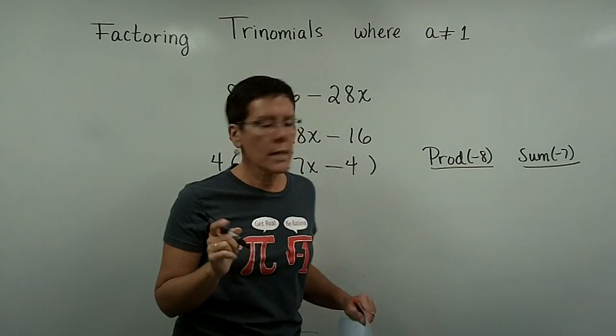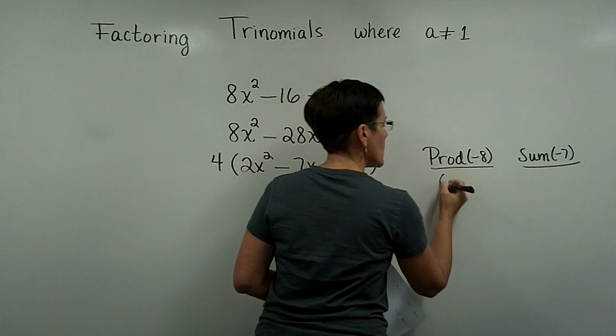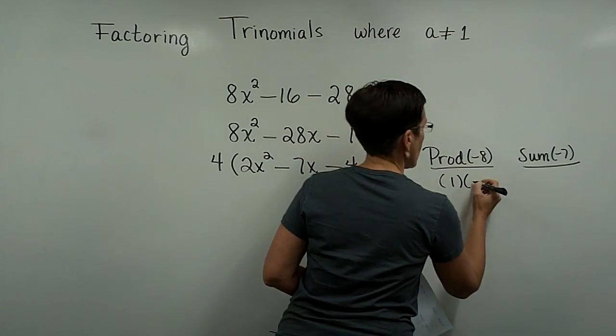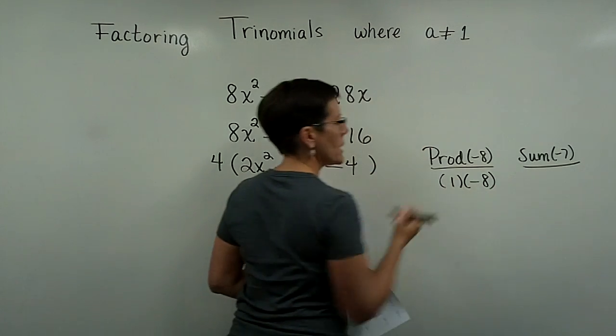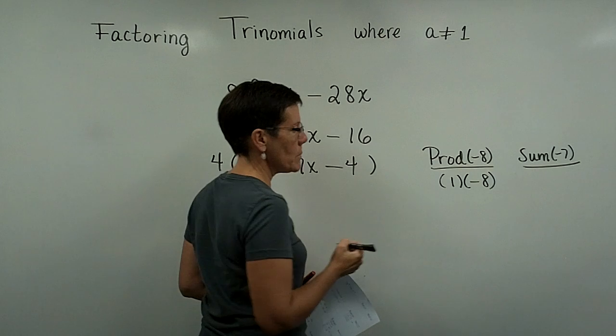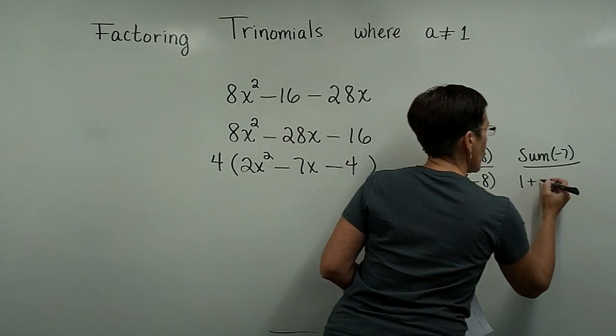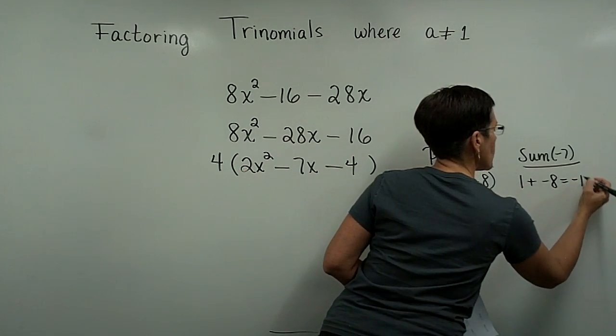And that one's pretty easy. That's going to be 1 and 8 most likely. Looks like it's going to be positive 1 and a negative 8. They multiply to be a negative 8, and they add to be a negative 7.